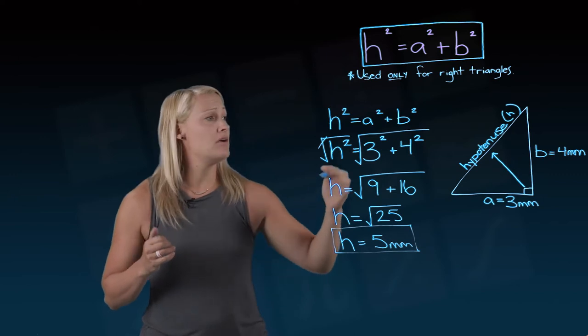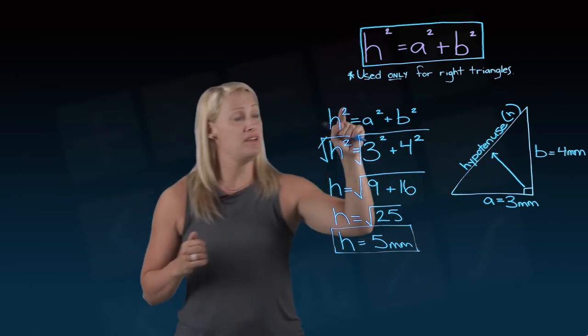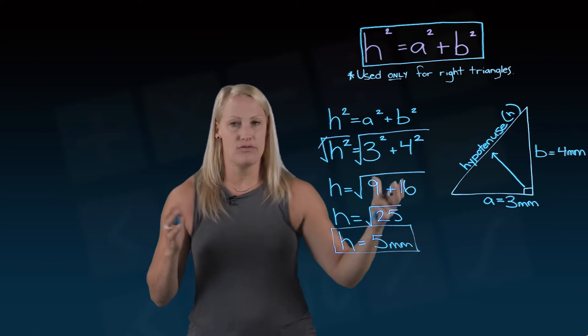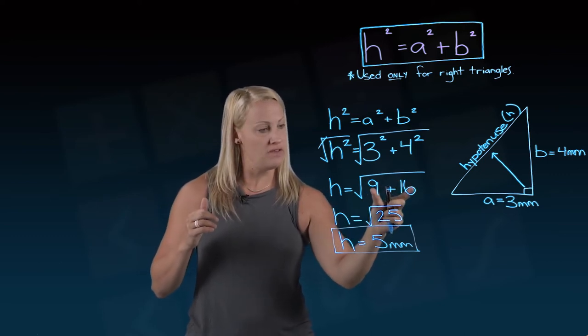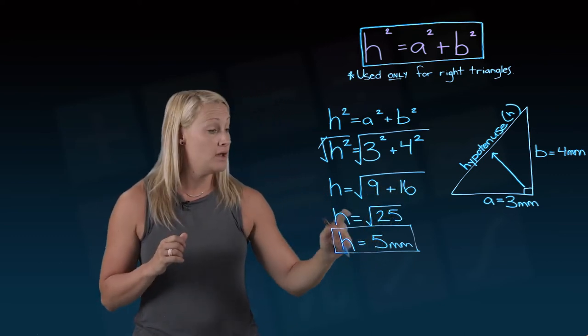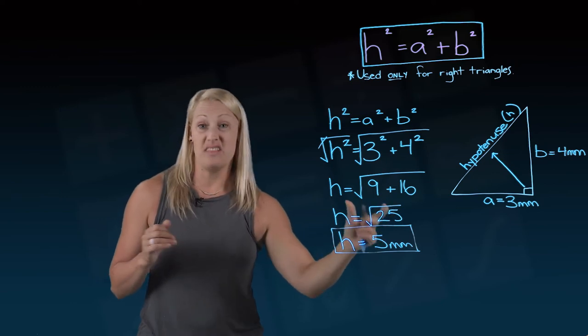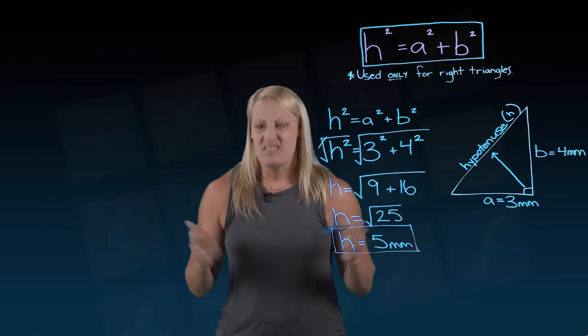So again, a couple things to think about here. Make sure that your hypotenuse is on one side by itself. And make sure that you're following your order of operations. You're doing this calculation under the square root sign before you are pressing that square root button on your calculator.